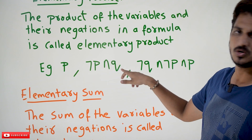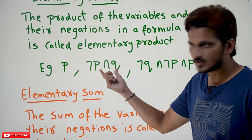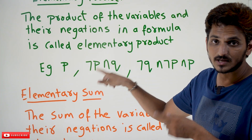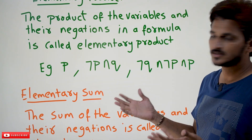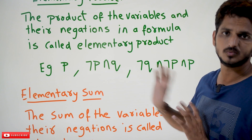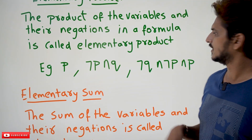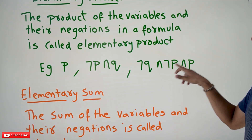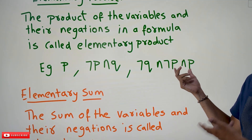For example, negation P conjunction Q — this formula contains products of variables and their negations. It is not necessary to contain a negation; you can simply write it as P conjunction Q. Similarly, negation Q conjunction negation P conjunction P is also called an elementary product.